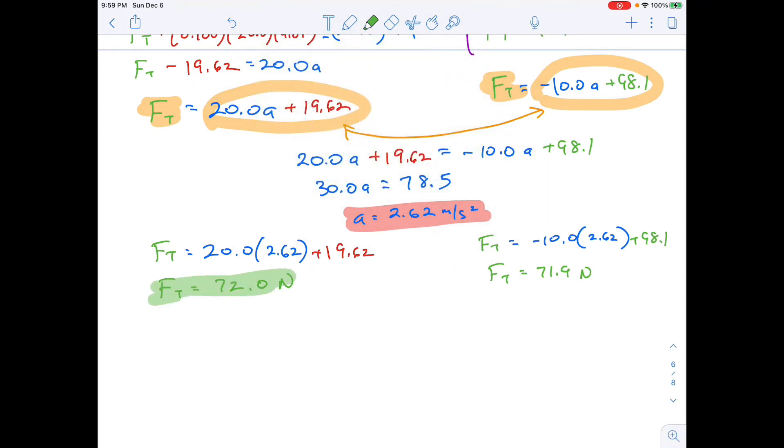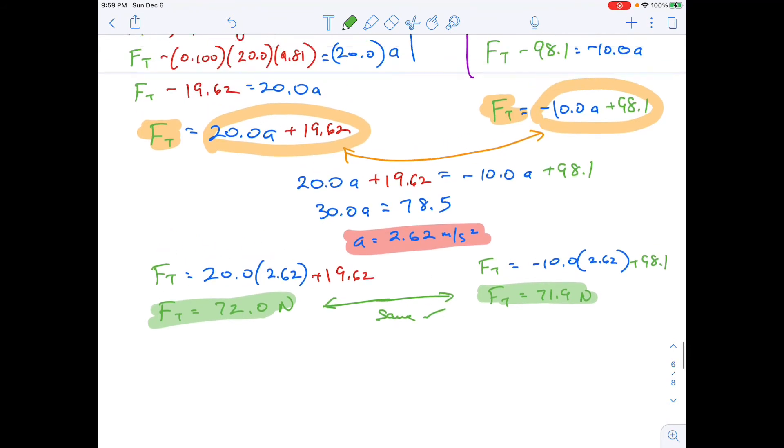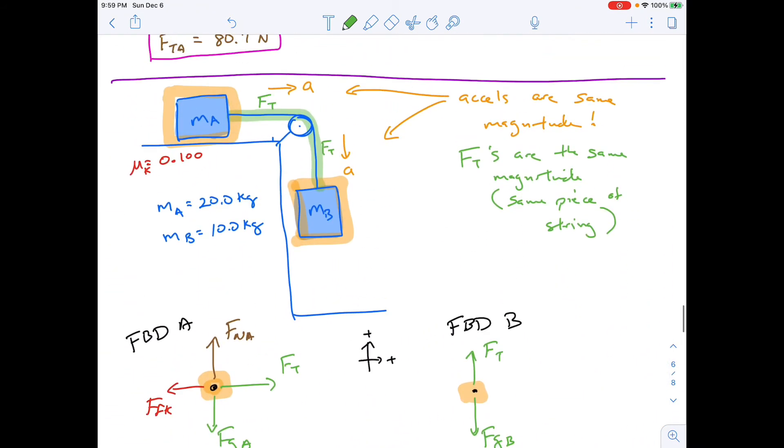And if I solved it, it should be, if everything works out, 71.9. And effectively, they're the same. There's some rounding here. But effectively, this and this, you know. So check, they're saying we're good.